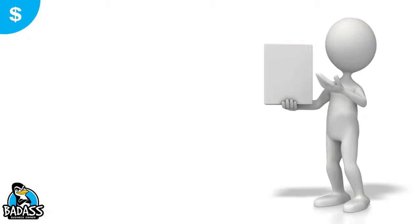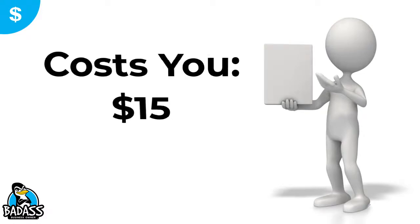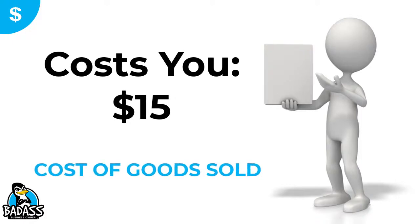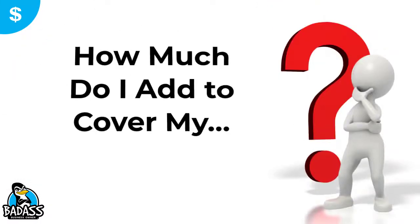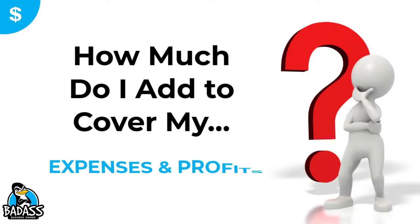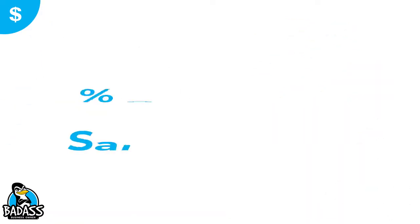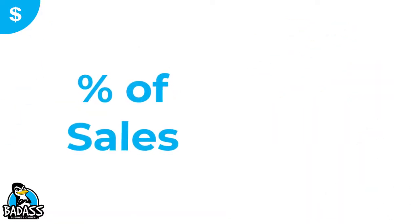Let's take a look at this product we sell. We know it's going to cost us $15, so our cost of goods is $15. The next question is how much should you add to cover your expenses and your profit? Everything we do is a percentage of sales.